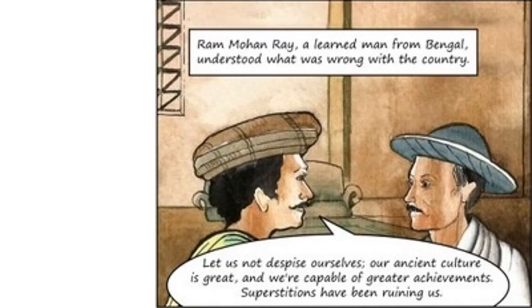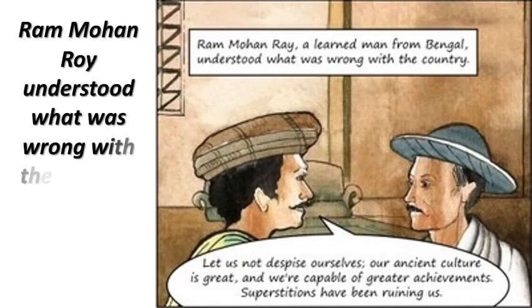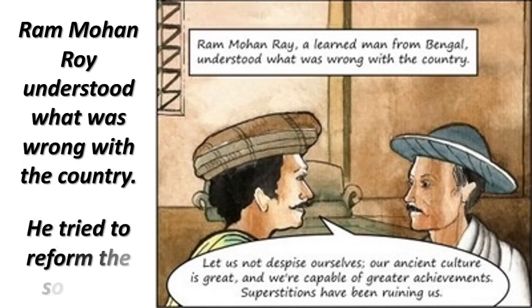Raja Ram Mohan Roy, a learned man from Bengal, understood what was wrong with the country. He said: 'Let us not despise ourselves. Our ancient culture is great and we are capable of greater achievements. Superstitions have been ruining us.' He tried to reform and save society from superstitions.